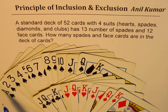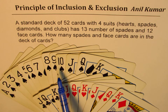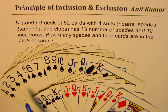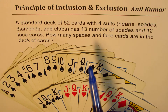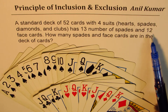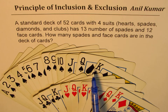Here is the deck of cards with spade cards — these are 13. Ace, which could be considered as 1, then 1 to 10. And these are the face cards: Jack, Queen and King. So 10 plus 3 is 13. That gives us 13 spades and 12 face cards — 3 of clubs, 3 of hearts, 3 of diamonds and 3 of spades makes it 12.